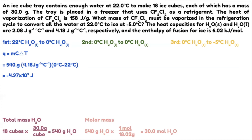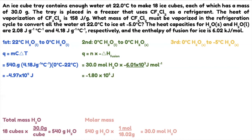Step two is the plateau — change in phase. When there's a change in phase, use moles times molar heat of fusion. Q equals N times negative molar heat of fusion. It's negative because this is a cooling curve. Substituting: 30 moles of H₂O times negative 6.01 times 10 to the third joules per mole gives negative 1.80 times 10 to the 5th joules.